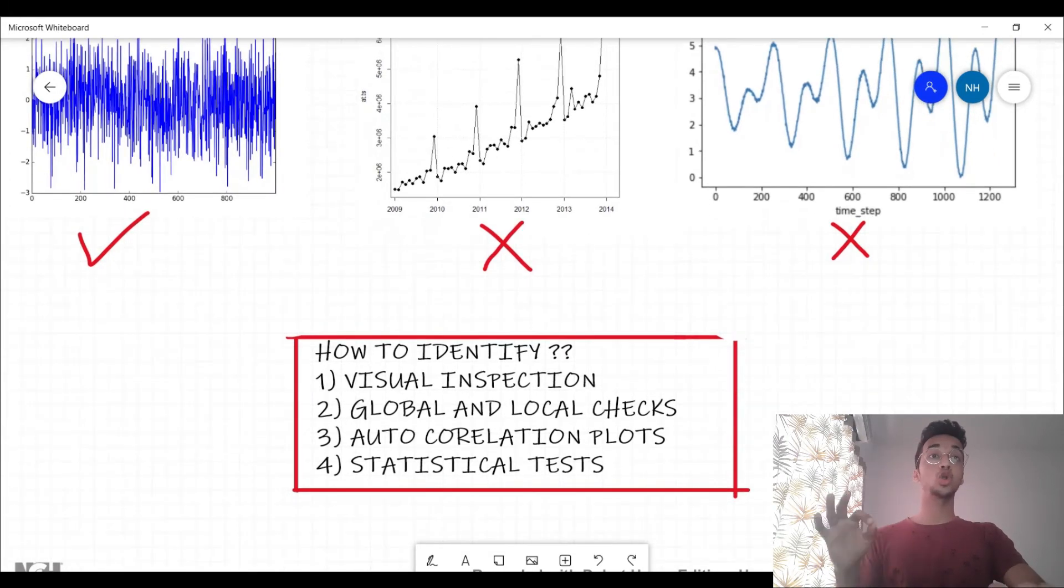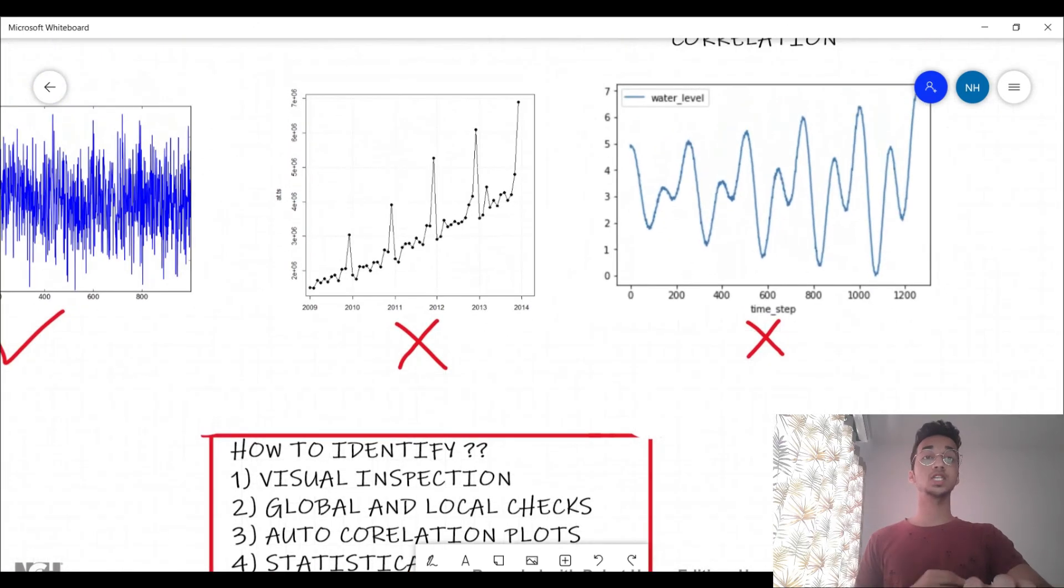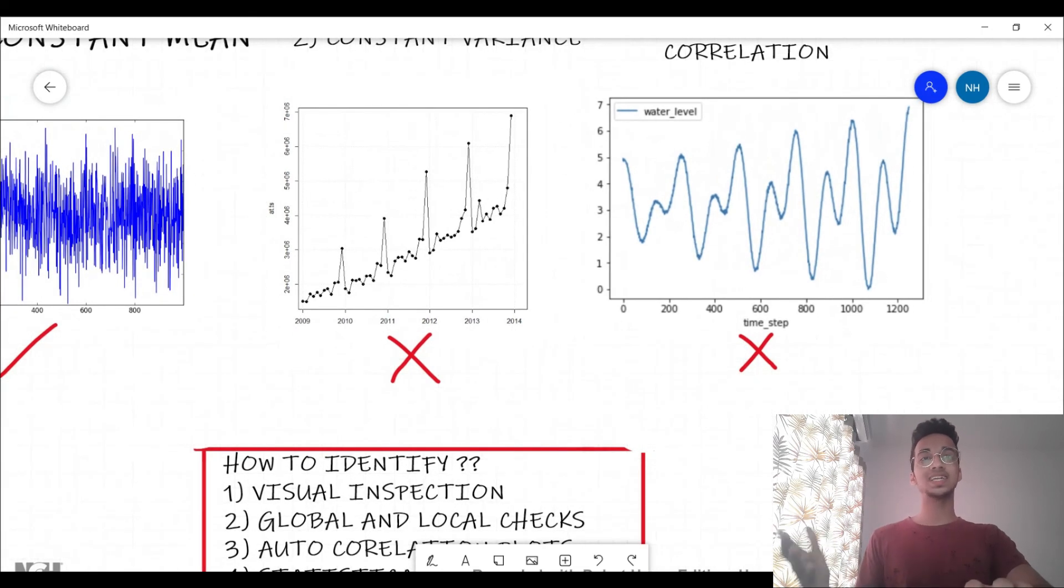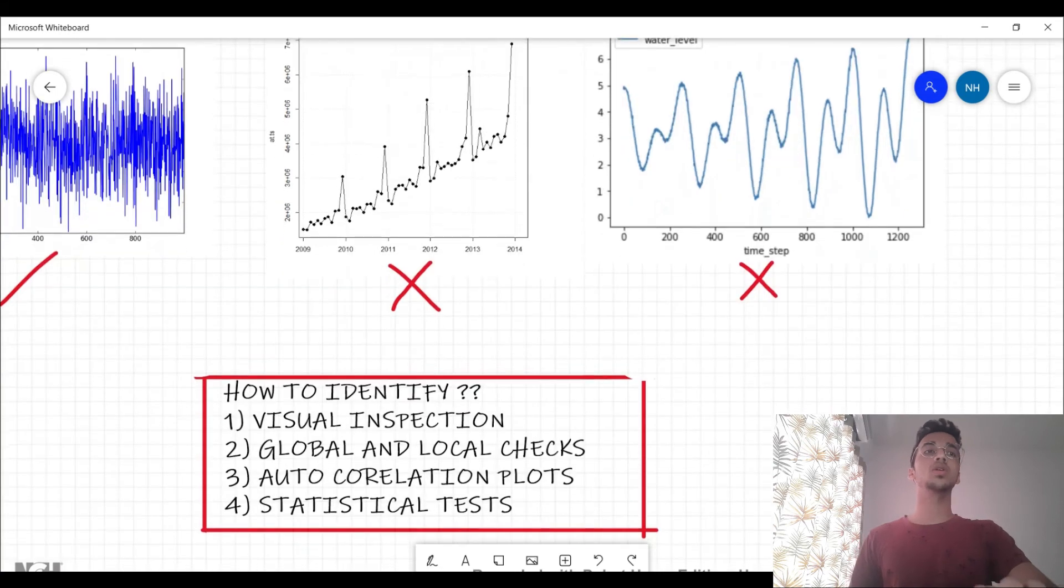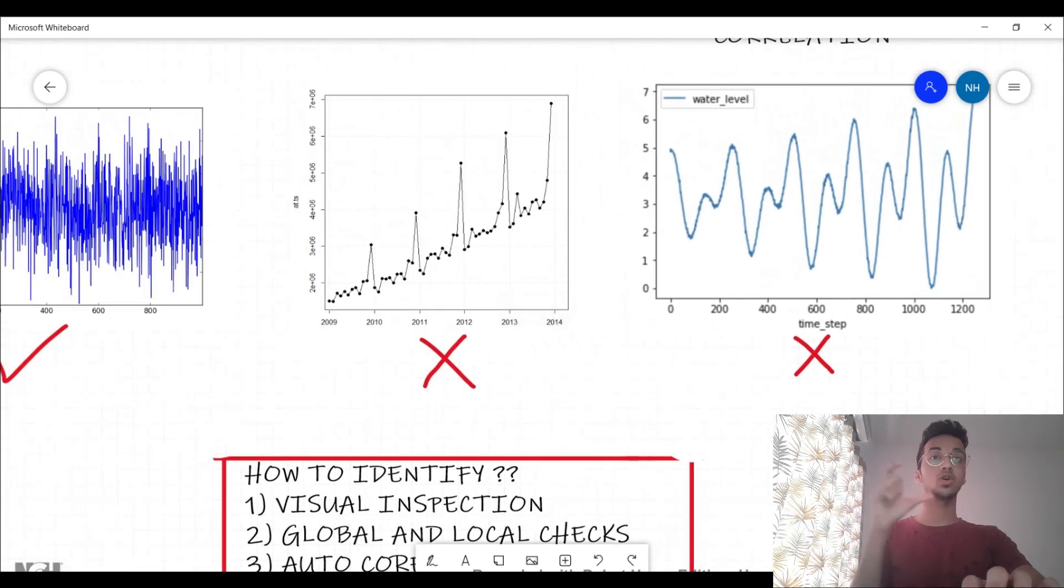Another method is autocorrelation plots, because in white noise there should be no autocorrelation. Autocorrelation plots will basically show you how the current values are related with the past values. So if there's a high autocorrelation in any of your plots, that is not white noise. Last is some statistical tests as well, which I'm not going to discuss now, but there do exist tests which will basically take a null hypothesis which claims that your series is white noise and an alternate hypothesis which claims that the series is not white noise. But more often than not, the first three methods would be sufficient to classify a series as white noise or not.